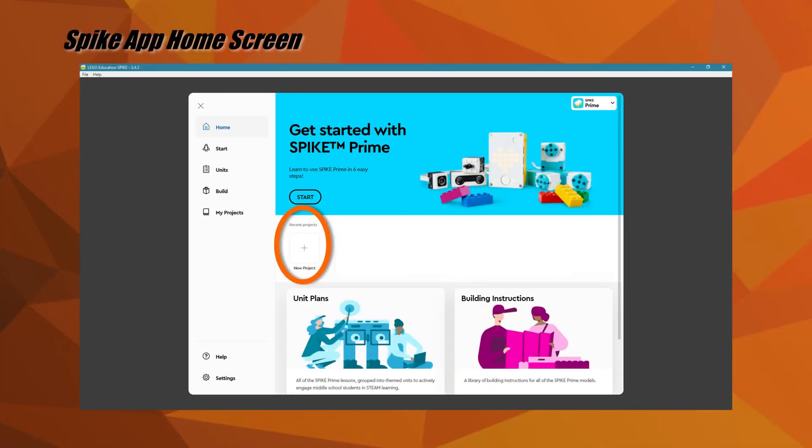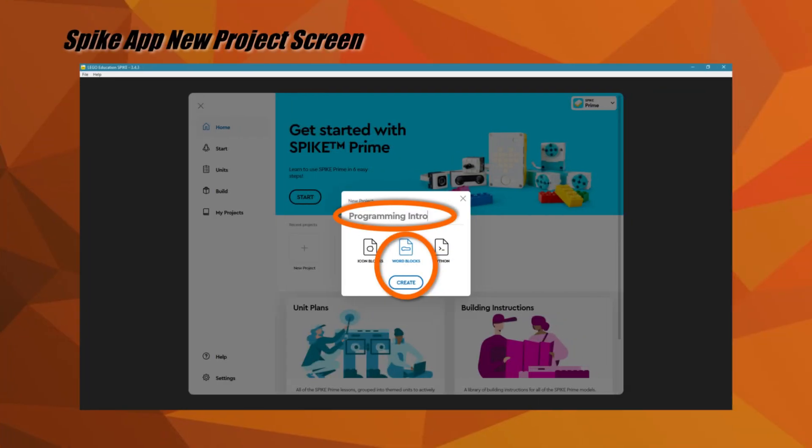From here you can select the Building Instructions where you can find the instructions to build the advanced driving base and attachments we use for our individual mission solutions. Any projects previously created in Spike Legacy App will be shown as shortcuts. If you are starting a new project, click on New Project. On the New Project screen, you will be asked to select if you want to use Icon Blocks, Word Blocks, or Python.